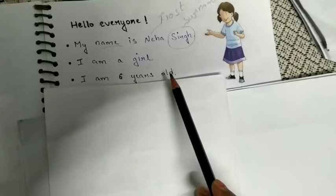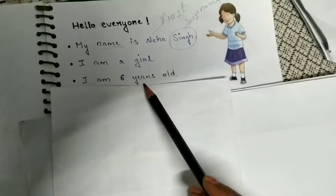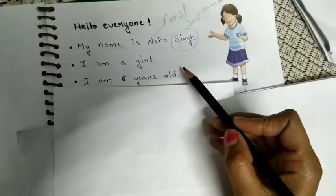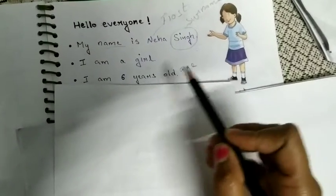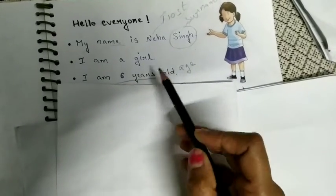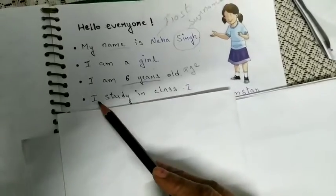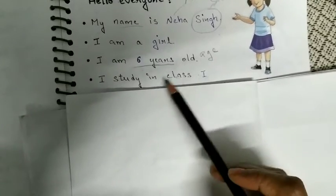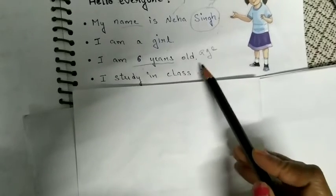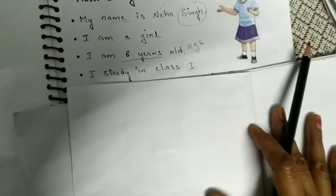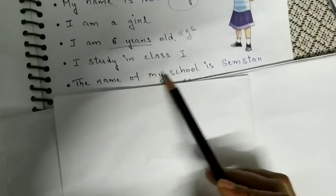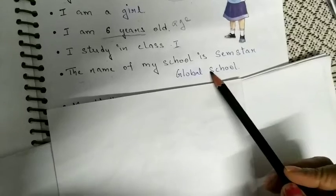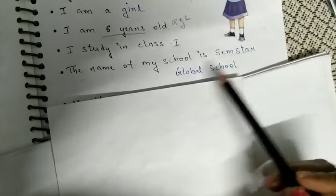I am six years old. Neha is telling us that she is six years old — meaning she is telling us her age. What is the age of Neha? Six years. I study in class first. Neha is saying that she studies in class first. The name of my school is Semester Global School. So Neha is introducing herself that she studies in Semester Global School.